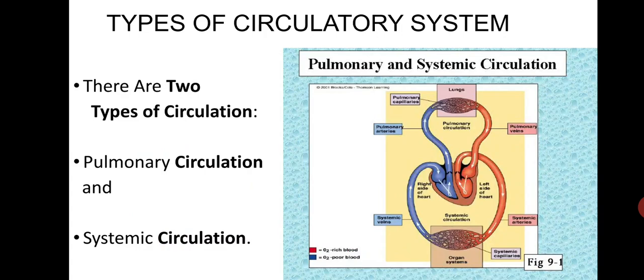The pulmonary circulation is the portion of the circulatory system which carries deoxygenated blood away from the right ventricle to the lungs and returns oxygenated blood to the left atrium and ventricle of the heart. The term pulmonary circulation is readily paired and contrasted with systemic circulation. You can easily see from the picture what it's telling about pulmonary circulation.